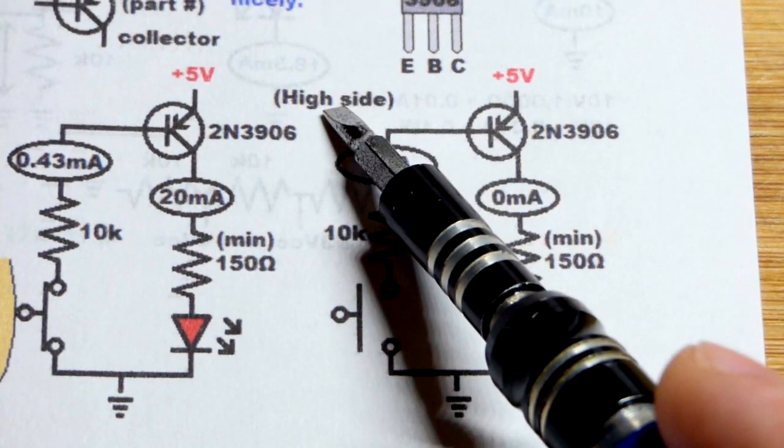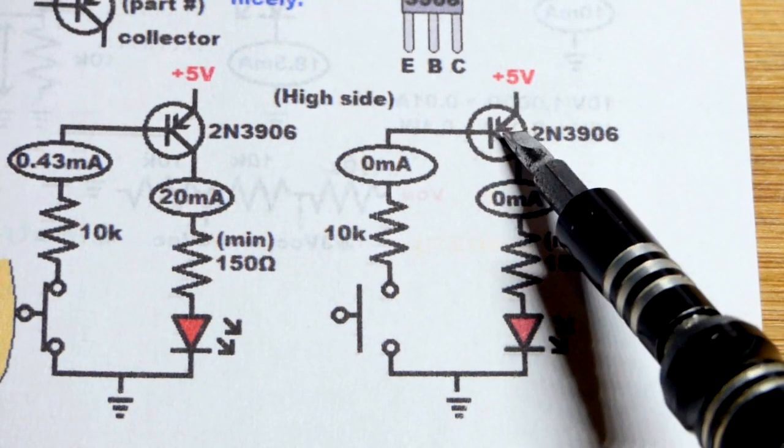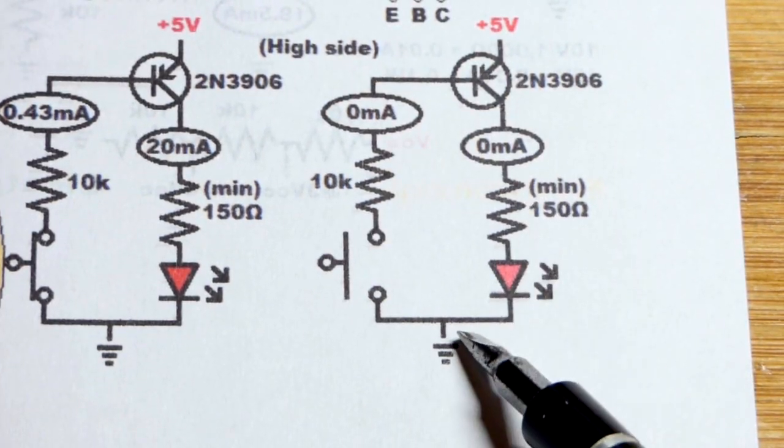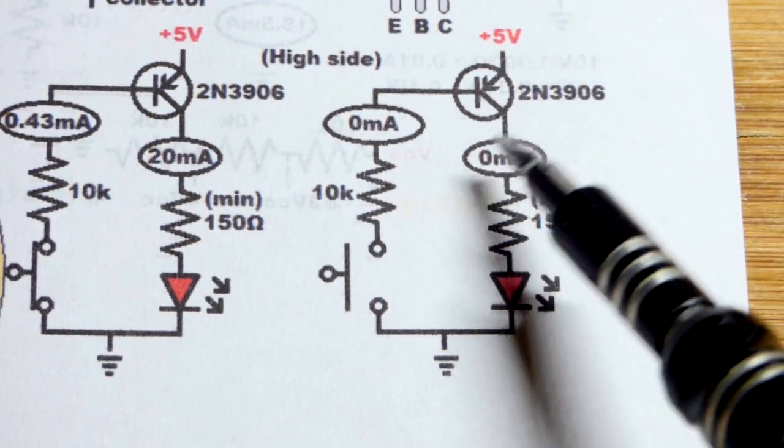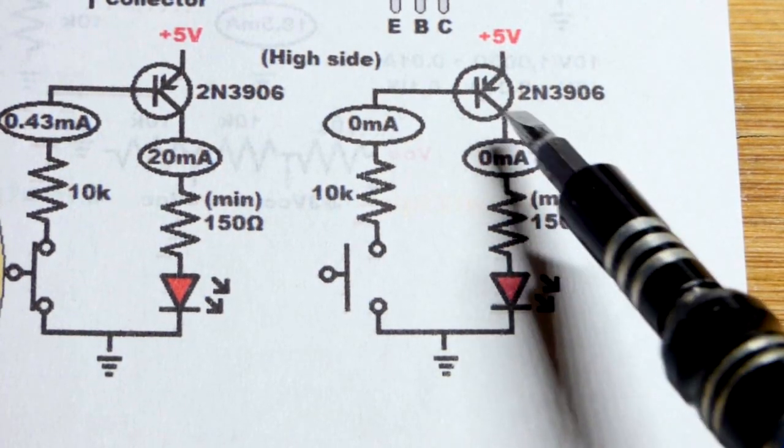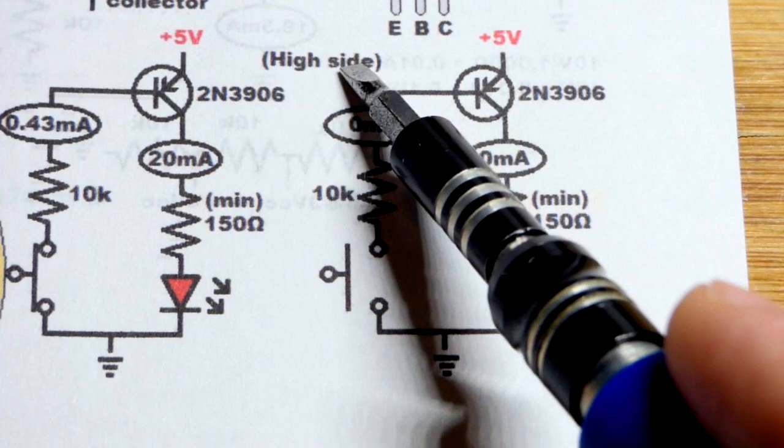So now, the transistor's on the high side of the circuit, more positive, and the load is more negative. With NPN, load was more positive, transistor was more negative. So, we have it on the high side now.